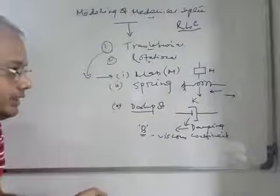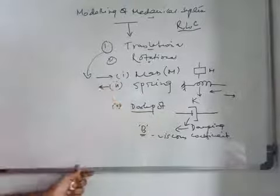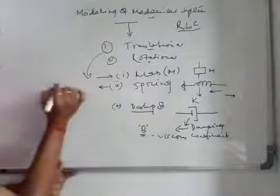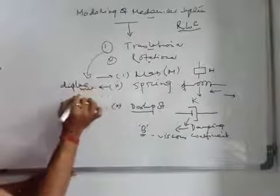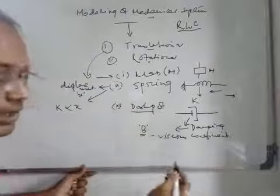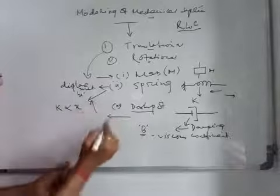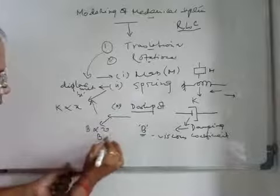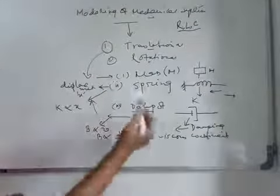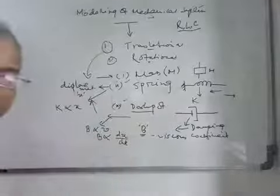The dashpot is also one kind of storage element used to model mechanical translational motion systems. So mass, spring, and dashpot are the three basic elements. The property of the spring is that whenever a force is applied and the spring is displaced by x, the spring force is proportional to x — that is k times x. And the property of the viscous damping coefficient is that the damping force is proportional to the velocity, written as b times dx/dt.